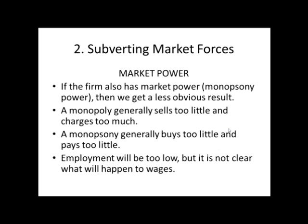Now, if the firm also has market power — market power on the side of buyers is called monopsony power — then we have a less obvious result. With a monopoly we see too little quantity and too high a price; with a monopsony we see too little quantity and too low a price. So if we have market power on both sides of the market, employment will be too low, but it's not clear what will happen to wages — whether wages will be the high wage the monopoly seller wants or the low wage the monopsony buyer wants. That will come down to bargaining power. Another way the union can subvert market forces is by going to government and having government do these things on their behalf — requiring that people use union workers.